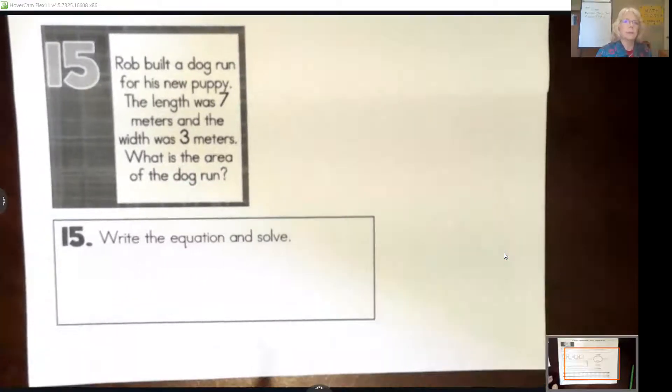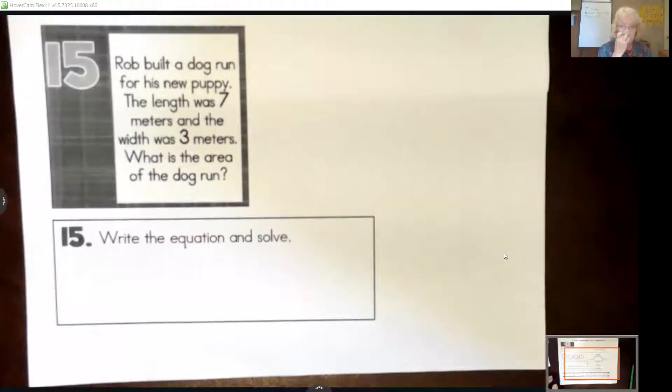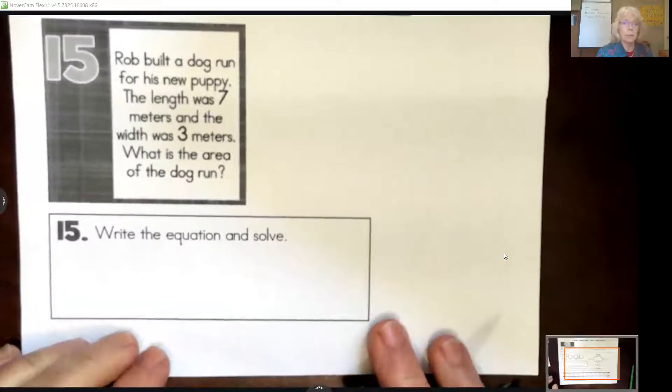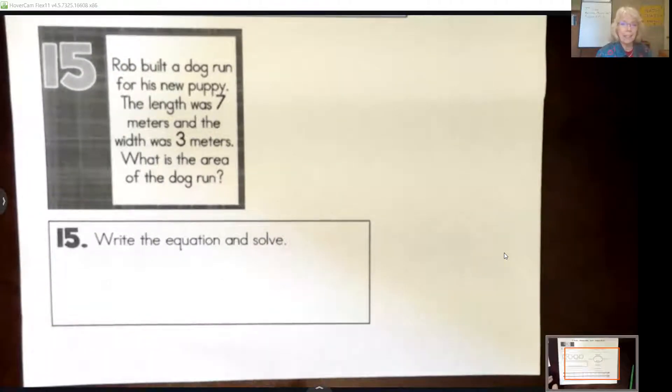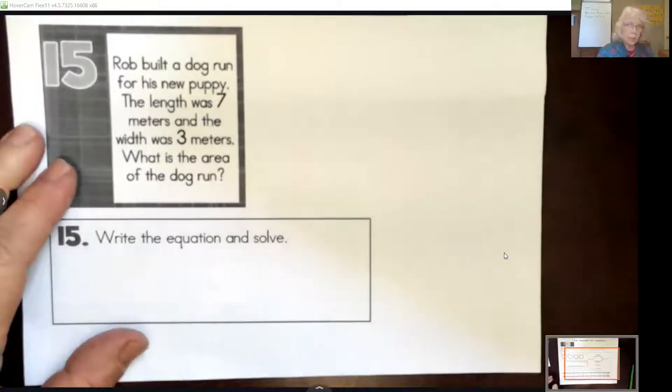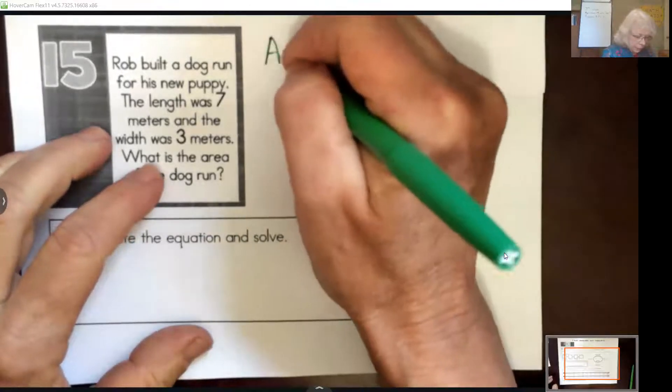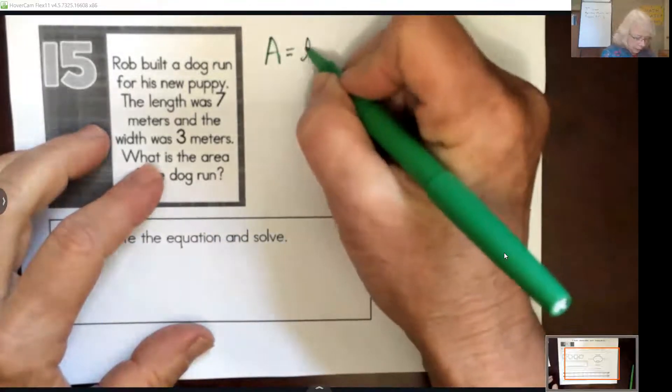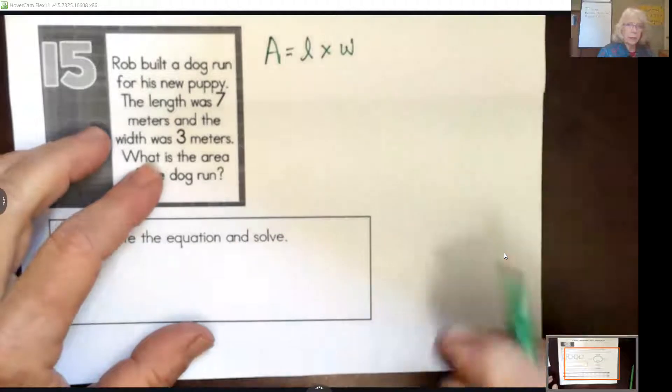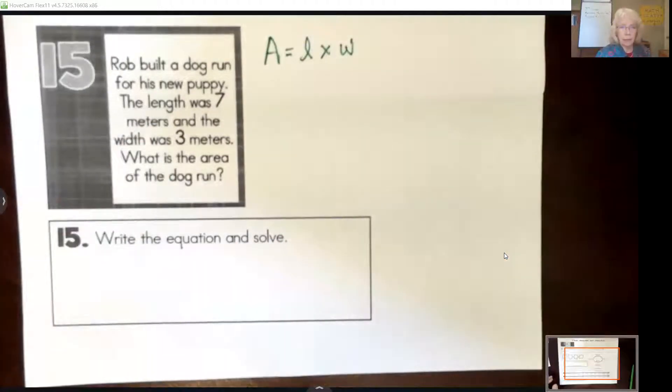Rob built a dog run for his new puppy. The length was seven meters and the width was three meters. What is the area of the dog run? Okay. Well, again, we know area formula is equal to length times width. So we could just figure this out by reading the length and reading the width, but I would very much like you to also draw this.